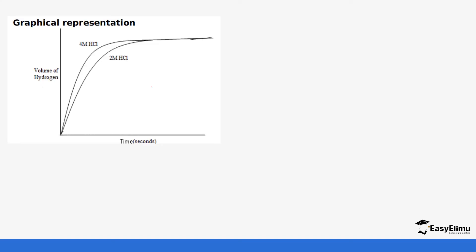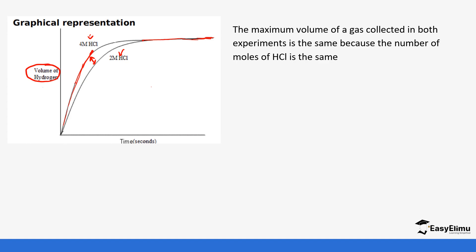Looking at the graphical representation, we measure the product being formed. Since we are varying the reactant concentration, the volume of hydrogen gas produced with the more concentrated acid will be higher compared to the less concentrated acid. You can see the curve of volume against time for the 4 molar hydrochloric acid is steeper and produces a much higher volume than the 2 molar. However, both curves level off at a certain point where the reaction stops, and the maximum volume of gas collected in both experiments is the same because the number of moles of HCl is the same.